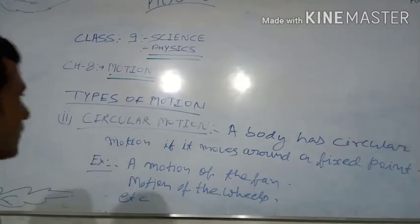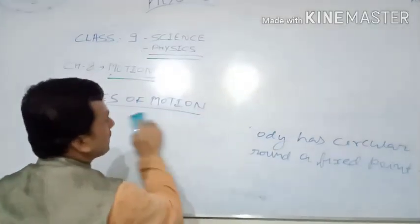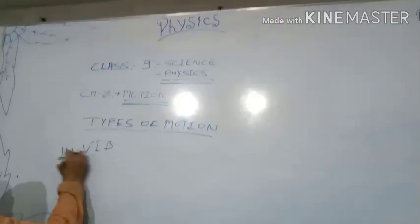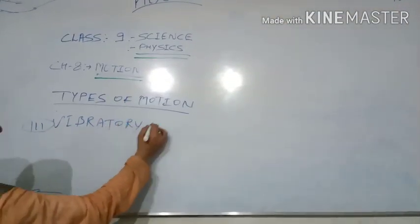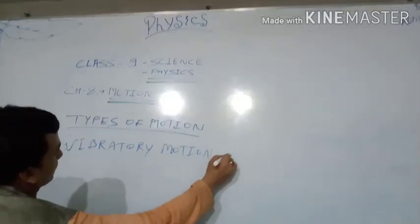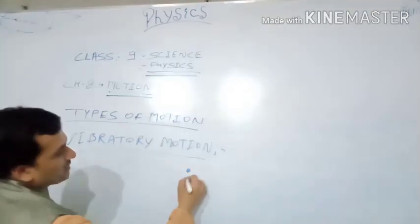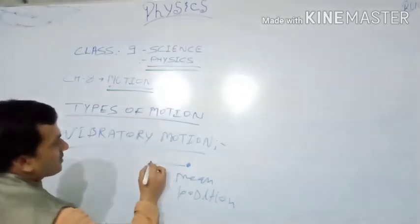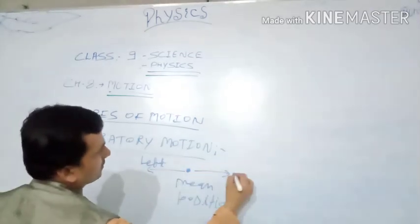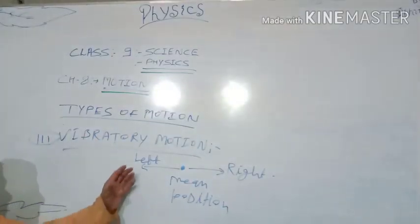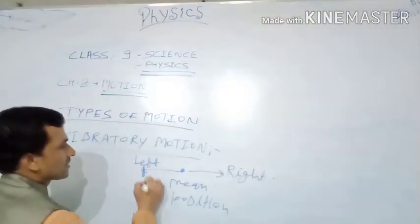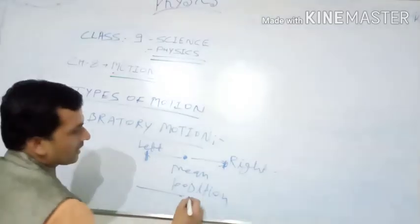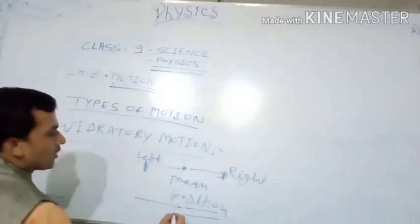Third type: vibratory motion. Suppose there is a mean position. The body goes from left to the mean position, and then to the right position, and back. So it moves left to mean position O, then to position A, then in the other direction to position B.